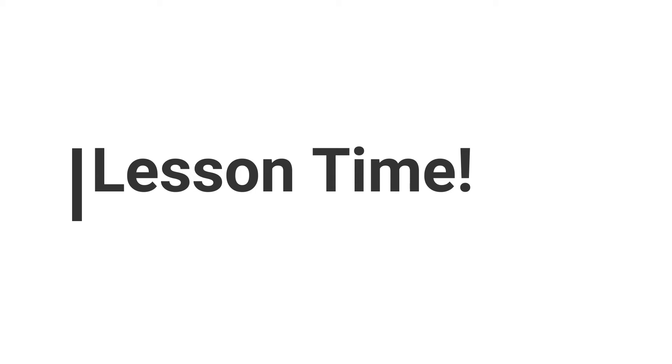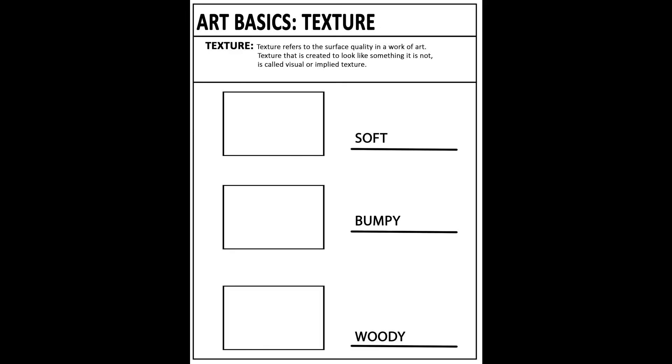For today's lesson we're going to be talking about texture. So what is texture? Texture refers to the surface quality in a work of art. Texture that is created to look like something it is not is called visual or implied texture. This is what we're going to be dealing with today. We're going to create three implied textures on this worksheet. I invite you to find these three textures in real life and try drawing them on this worksheet.